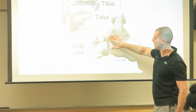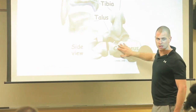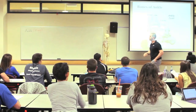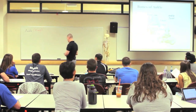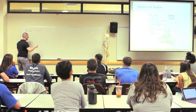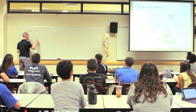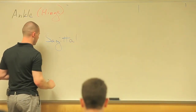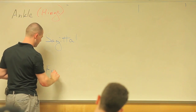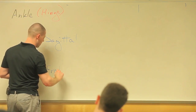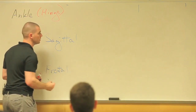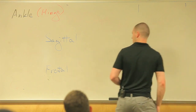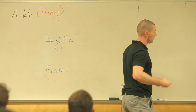Tibia, fibula, talus, calcaneus - those are kind of the bones that make up our ankle. So we got some sagittal joint actions and we got some frontal actions. I guess I could actually kill two birds with one stone here and just make our word bank.